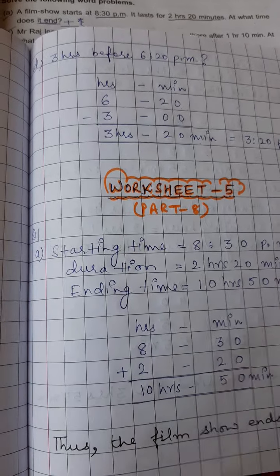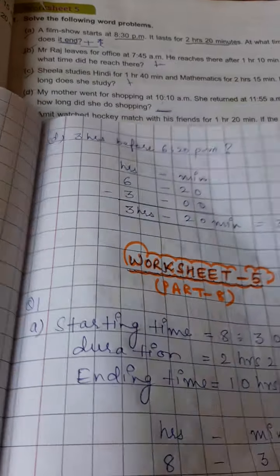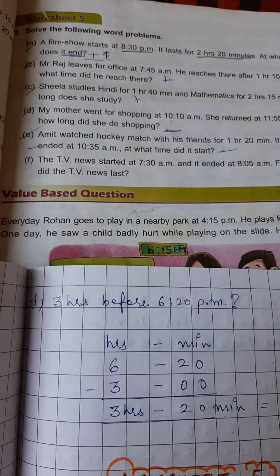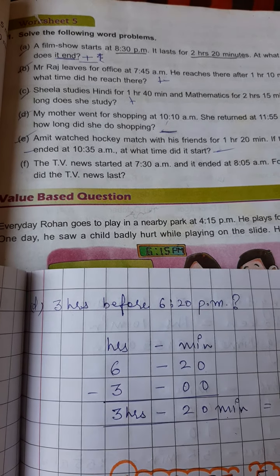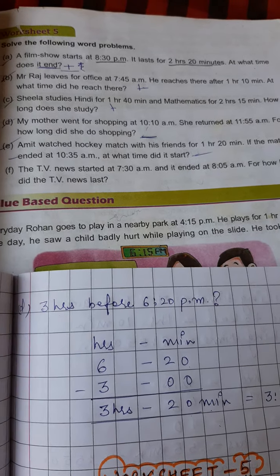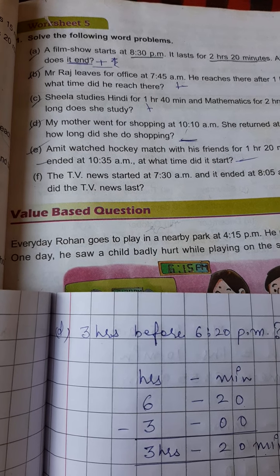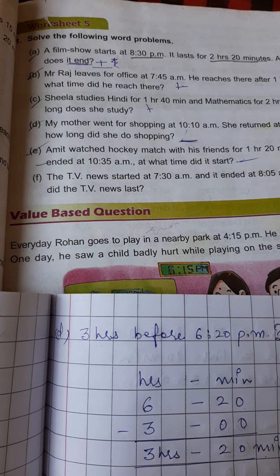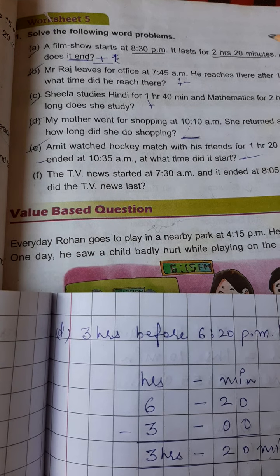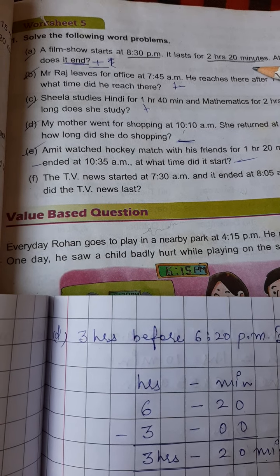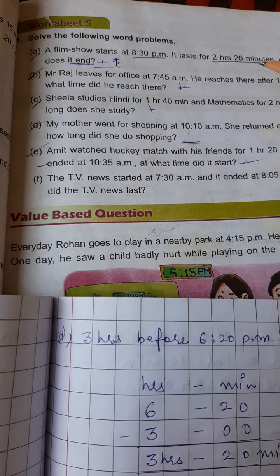The first question is, a film show starts at 8.30pm, it lasts for 2 hours 20 minutes, at what time does it end? Now students here, the starting time is 8.30pm and the duration of the film show is 2 hours 20 minutes and we have to find when does it end.